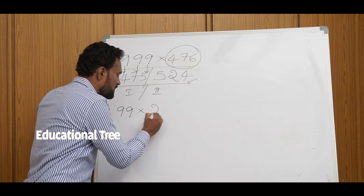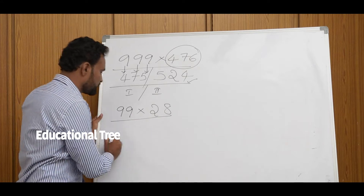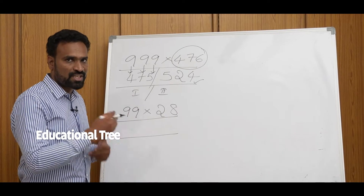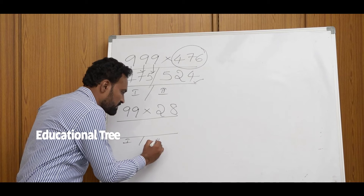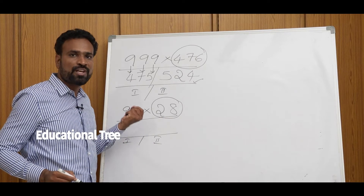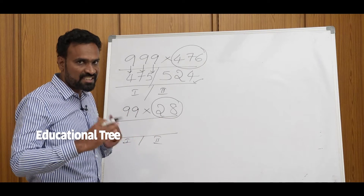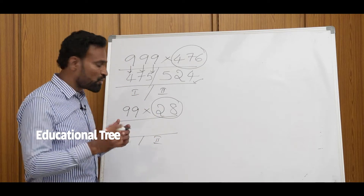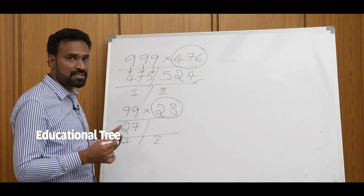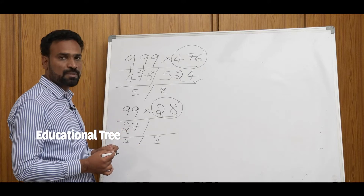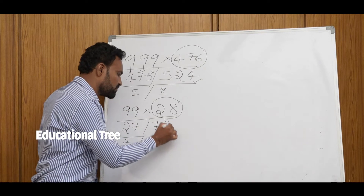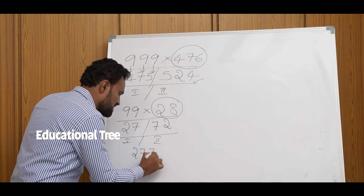Let's do one more problem: 99 into 28. We have to take one less than the number we are multiplying. Here we have 28, so one less than 28 is 27. That is the first part of the answer. For the second part, subtract from 9: 9 minus 2 is 7, and 9 minus 7 is 2. So our final answer is 2772.